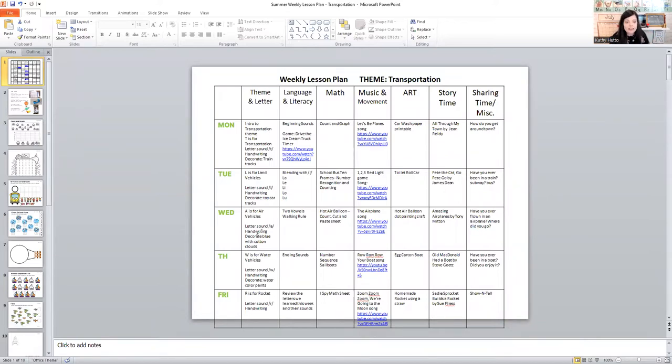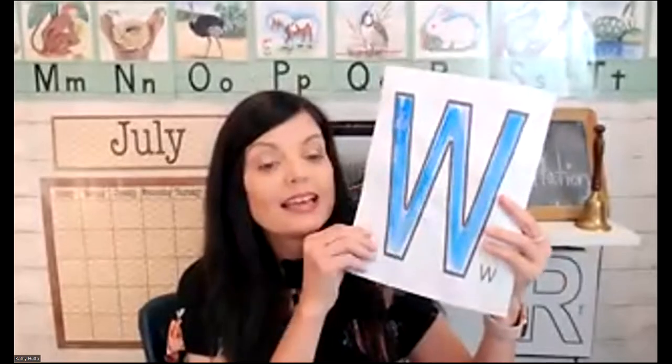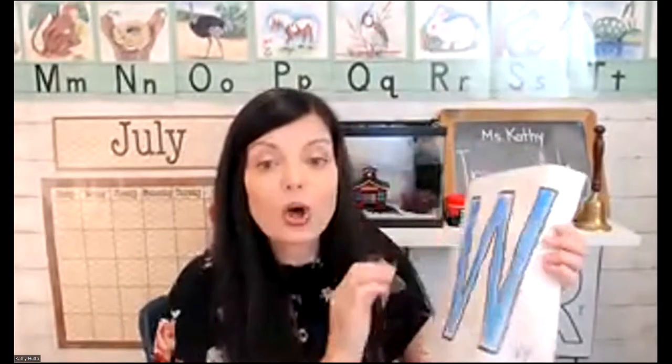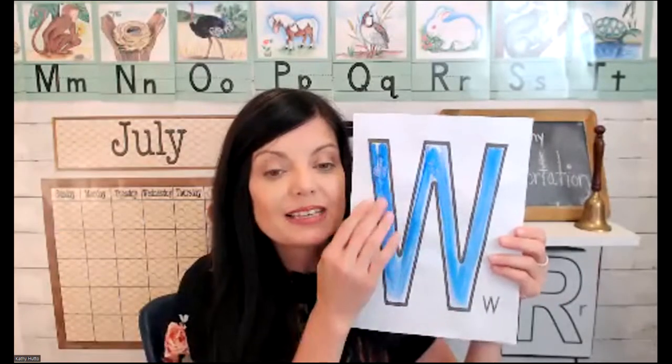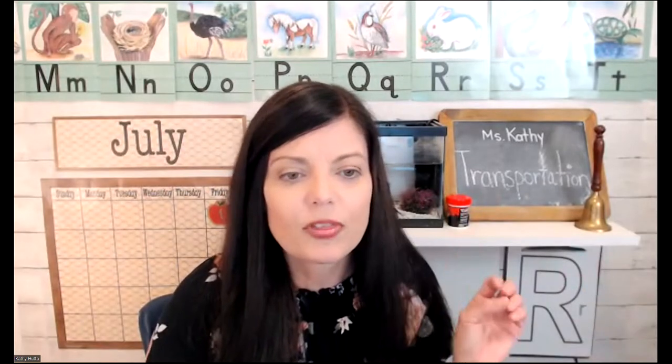Now we're on to Thursday. For Thursday, W was for water vehicles. We used watercolor paints to decorate our letter W, and I showed the kids a really fun idea that you can do to make that look even more kind of watery is just to sprinkle on some salt while the paint is still wet. And then when it dries, it just kind of makes this ripply effect like water. Just something extra, just a fun way to decorate and just not the same old thing.